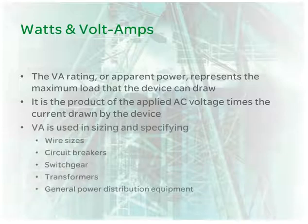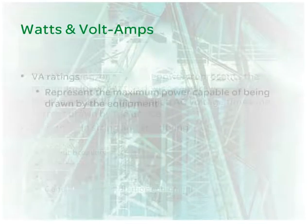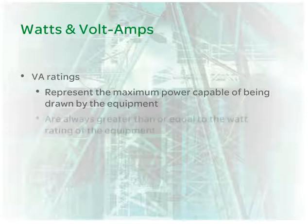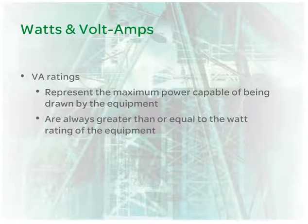VA is used in sizing and specifying wire sizes, circuit breakers, switchgear, transformers, and general power distribution equipment. VA ratings represent the maximum power capable of being drawn by the equipment. VA ratings are always greater than or equal to the watt rating of the equipment.